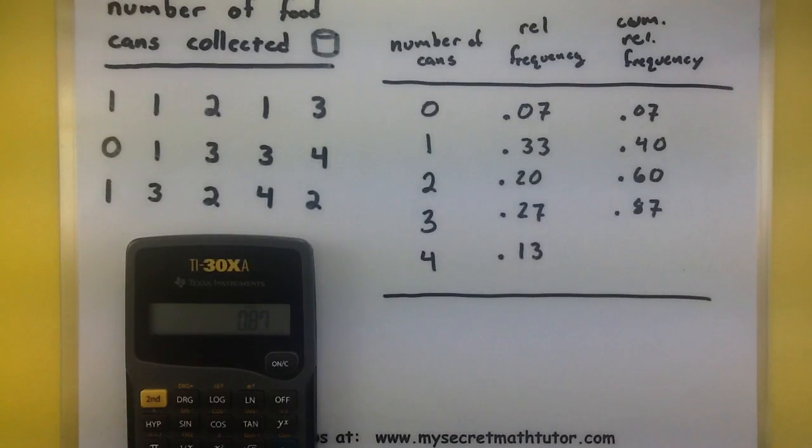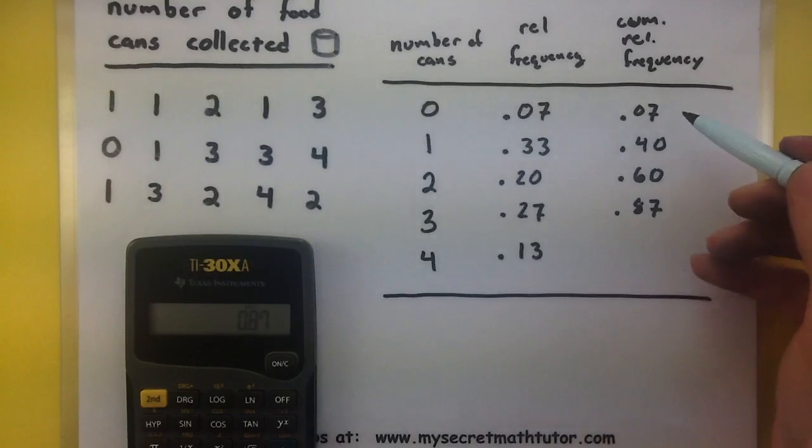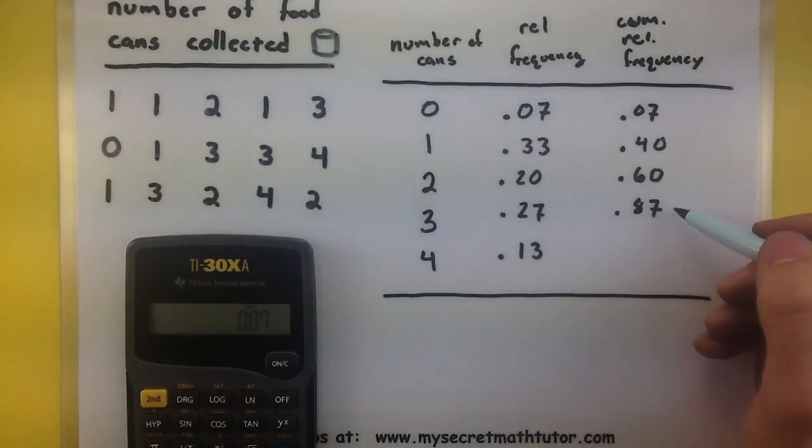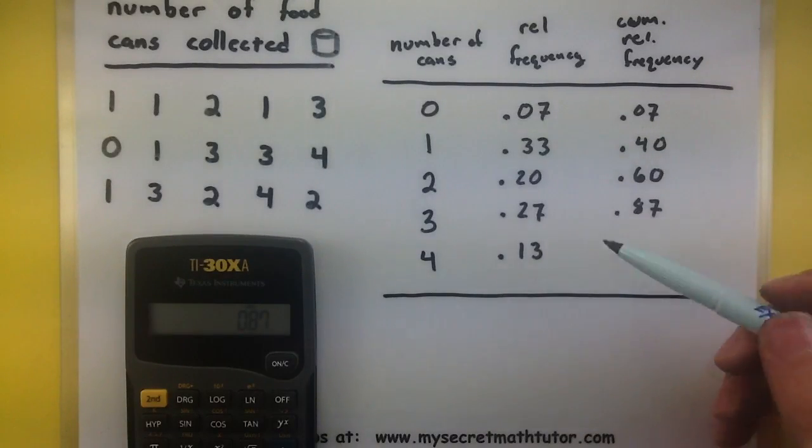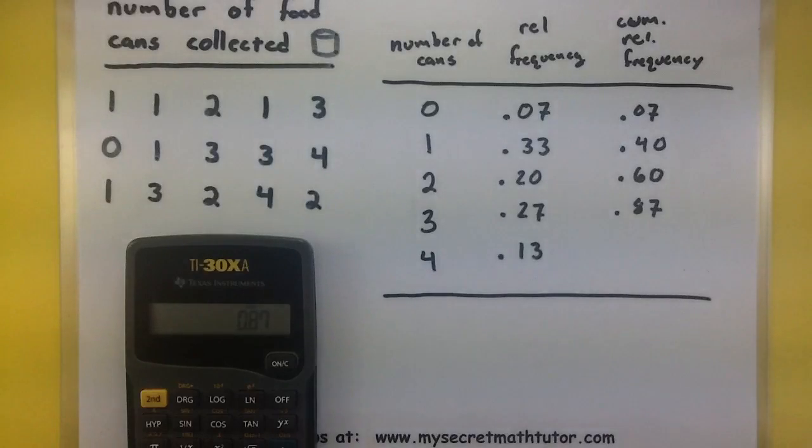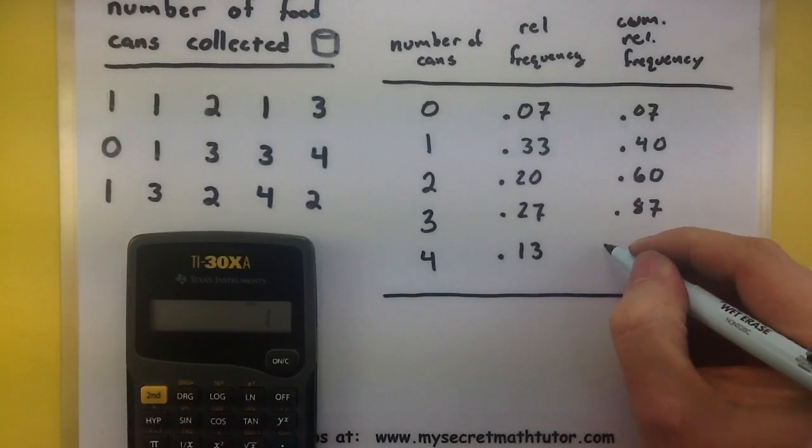If you want to make this process go a little bit faster, when you're filling in this last column, you can just add up the previous value, since it has already added up the ones before that.